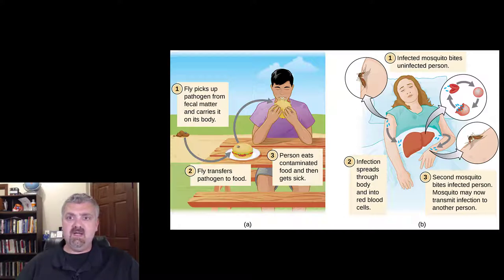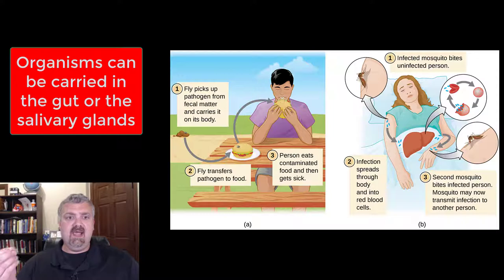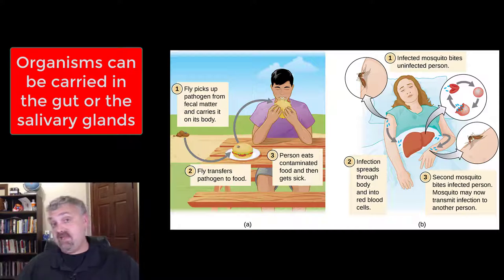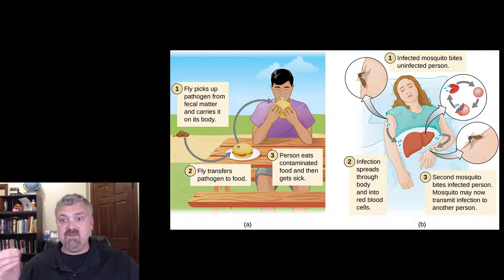So that's a good example of biological transmission. But there are two different types of biological transmission, or two different places where these organisms can be reproducing before they're spread to the next host. And that would be in the gut or in the salivary glands. I just mentioned this is an example of the salivary glands. So this parasite would grow inside the mosquito and then be deposited when it dumped its saliva into you, the human.